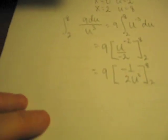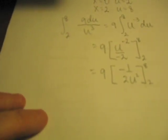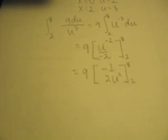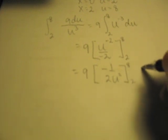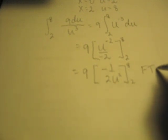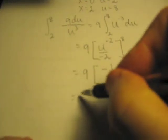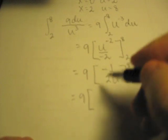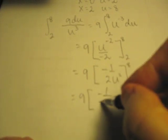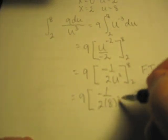Now, we employ the Fundamental Theorem of Calculus. The Fundamental Theorem of Calculus says that this will become 9 by negative 1 over 2 by 8 squared.